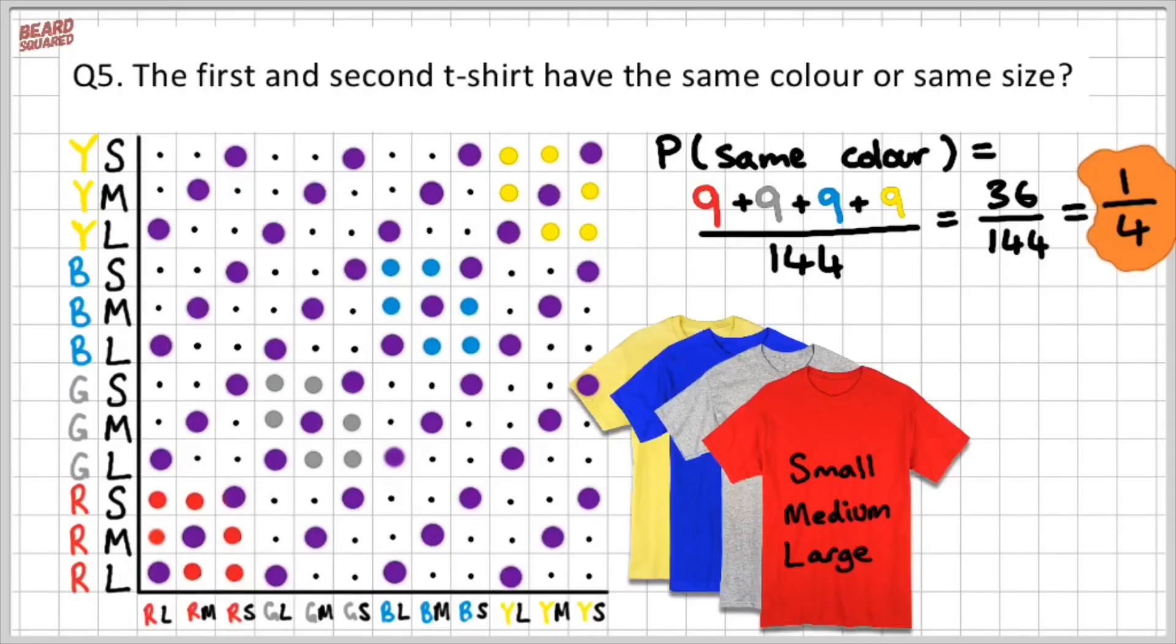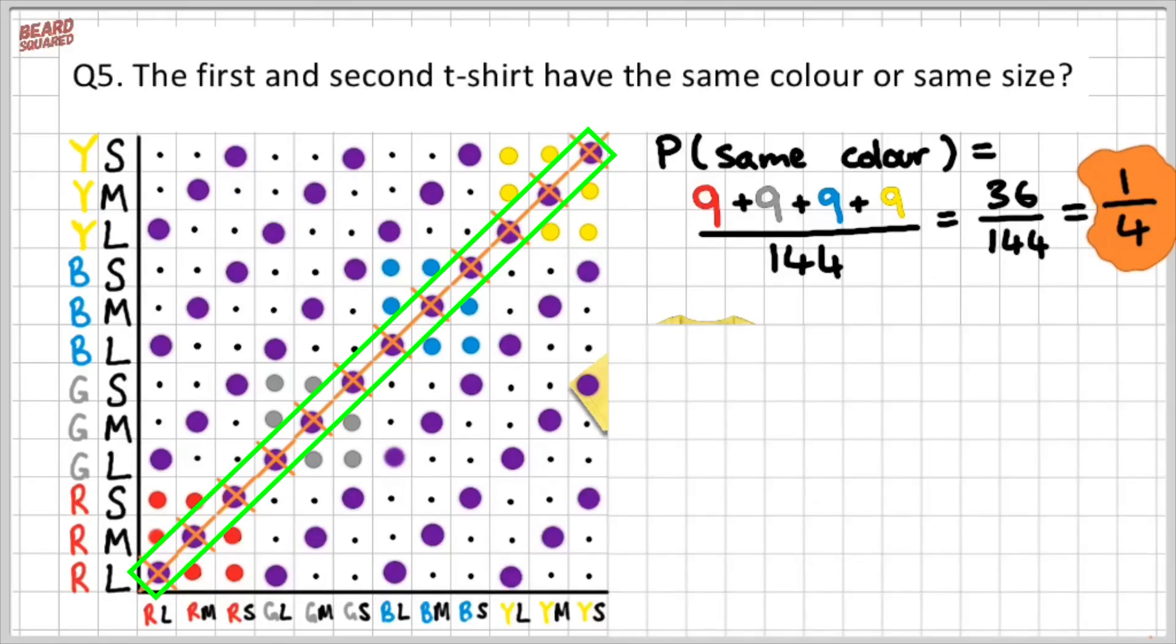Now one very important thing that you need to notice is if you look at the same color and the same size, we have an overlap. We have these 12 outcomes that are repeated. Now we do not want to count these purple dots here, because they are a repetition of the previous outcome. So what we need to do is we need to discount them or cross them out like this, so we don't count them in our calculation.